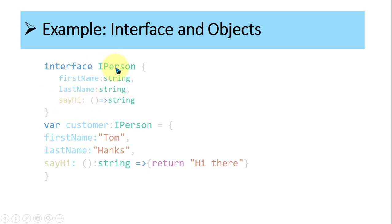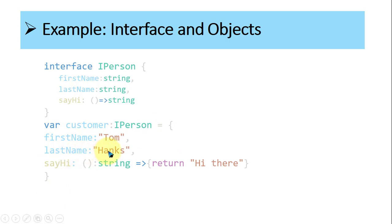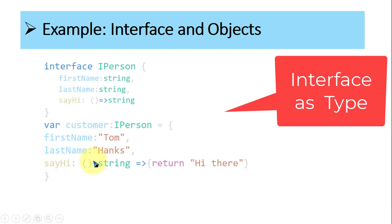Now I want to assign this IPerson object directly. TypeScript allows you to assign an IPerson interface object. The variable 'customer' has a type of IPerson. To assign it, the body starts: firstName is equal to a value, lastName is equal to a value, and the function has a definition returning 'hi there'. This is an anonymous object created directly with the help of the interface — there is no class. It is an anonymous object assigned to the variable customer, so customer now holds an object of the interface.